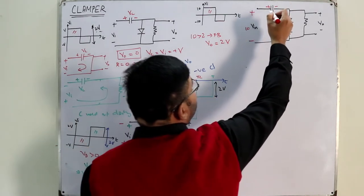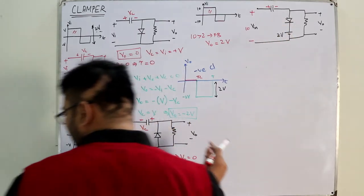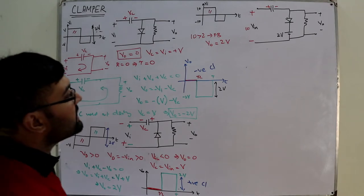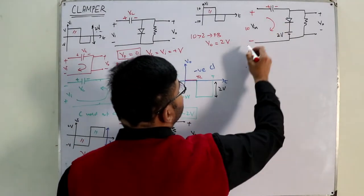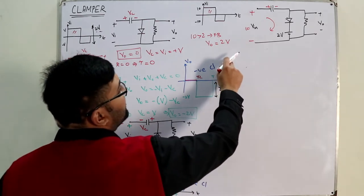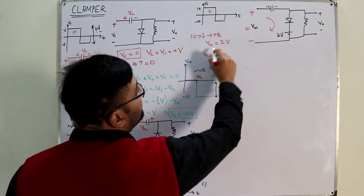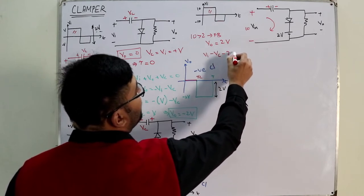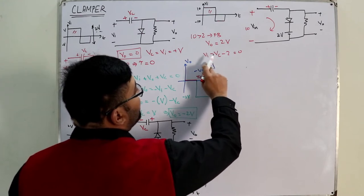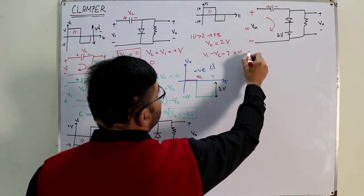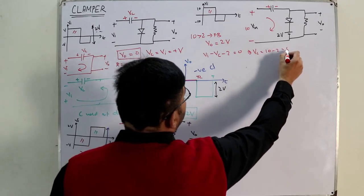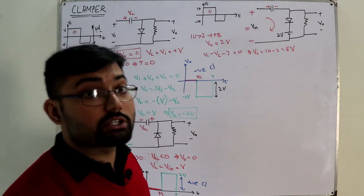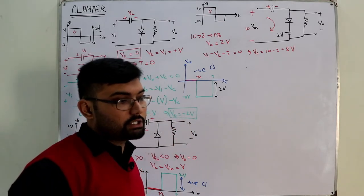Voltage across the capacitor: this is connected here and this is connected here — plus-minus. Applying KVL: V input minus VC minus 2 is equal to 0. So VC is 10 minus 2 equals 8 volts. This will stay at 8 volts for the next cycle as well because the time constant is quite large and it would not discharge.